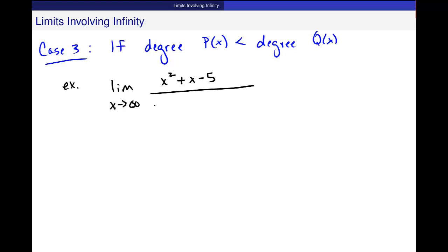Okay? One more case, case 3. If the degree of p(x) is less than the degree of q(x). And let's do an example. Find the limit as x is going to infinity of x squared plus x minus 5 over negative x cubed minus 2x plus 1.